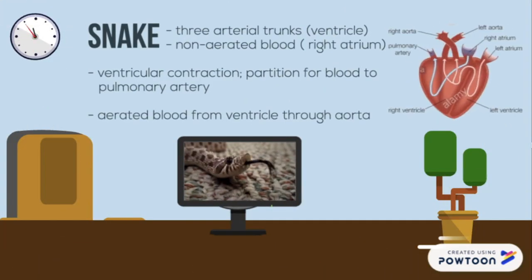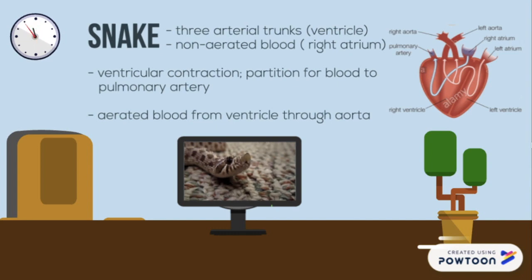In snakes, all three arterial trunks come out of the chamber of the ventricle that receives the non-aerated blood of the right atrium. During ventricular contraction, a muscular ridge forms a partition that guides the non-aerated blood into the pulmonary artery, while the aerated blood received by the other chamber of the ventricle is forced through the opening in the ventricular septum and out through the aortas.